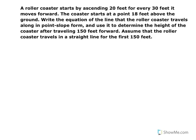The problem says a roller coaster starts ascending 20 feet for every 30 feet it moves forward. The coaster starts at a point 18 feet above the ground. Write an equation of the line for the roller coaster traveling along in point-slope form, and use that to determine the height of the coaster after traveling 150 feet forward. Assume that the roller coaster travels in a straight line for the first 150 feet.